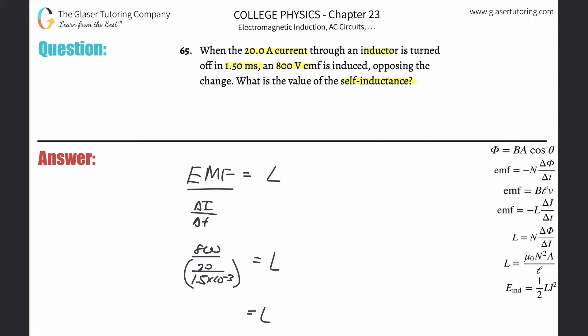1.5 times 10 to the minus 3. I got a question mark in there. One more time: 800 divided by parentheses, 20 divided by 1.5 times 10 to the minus 3, close them.